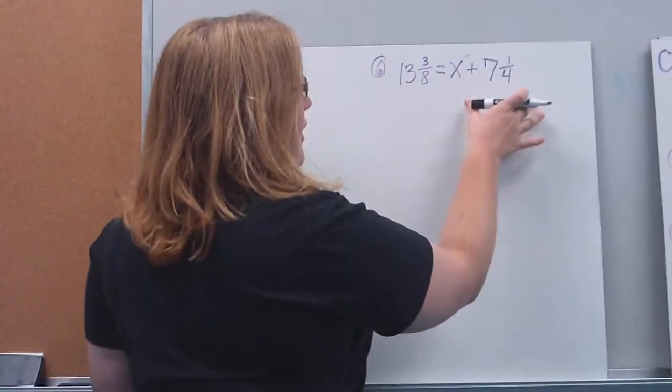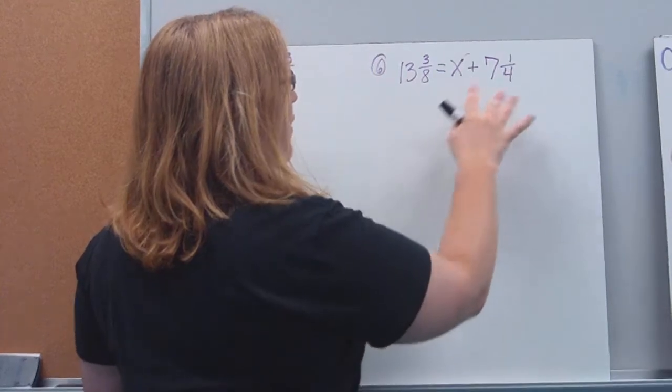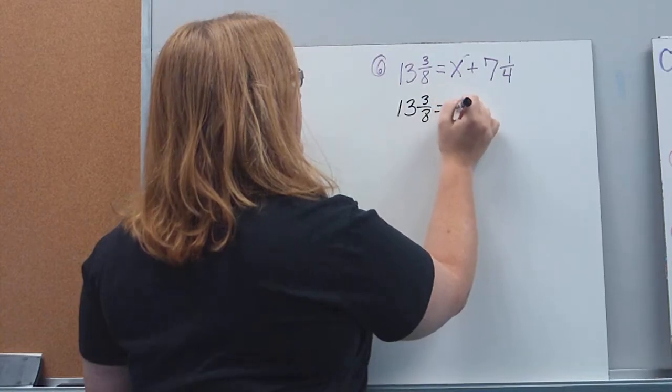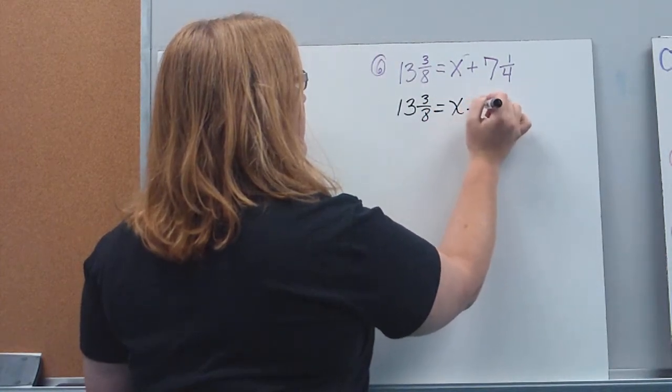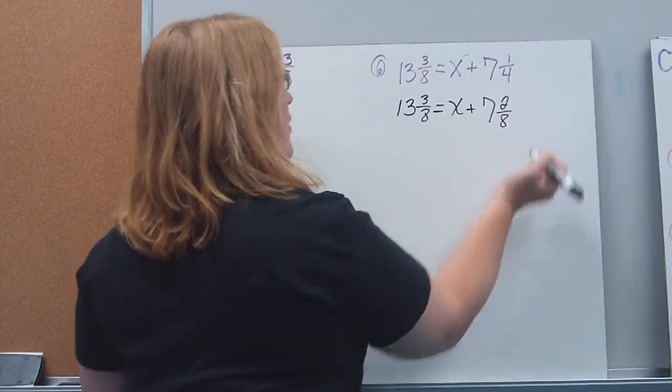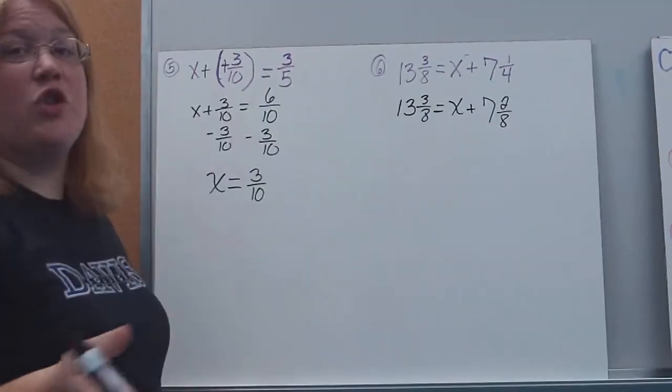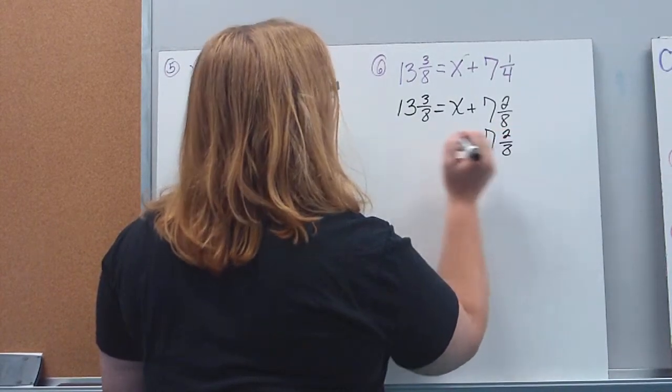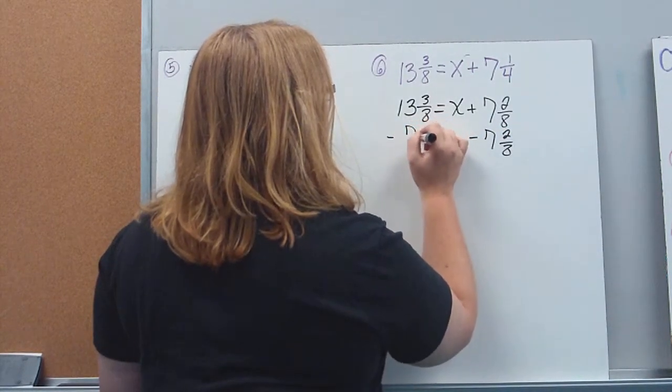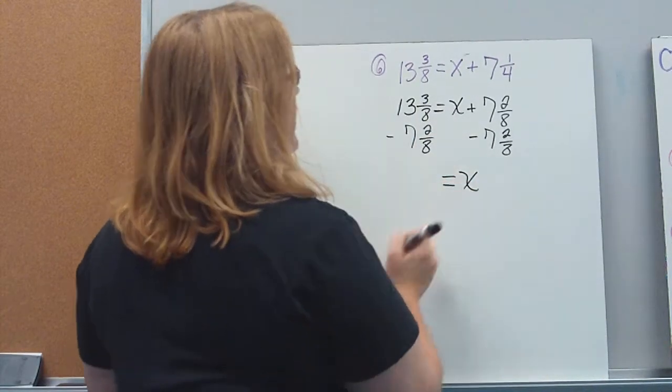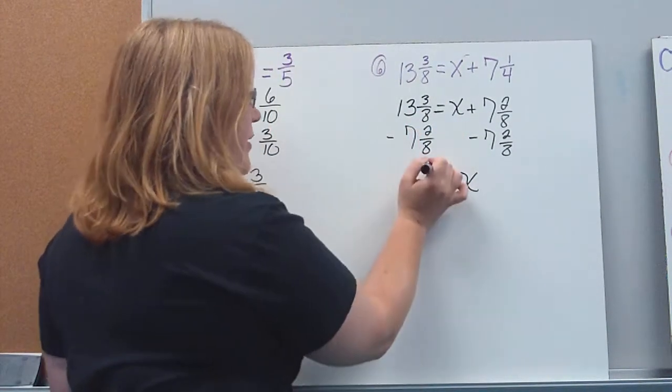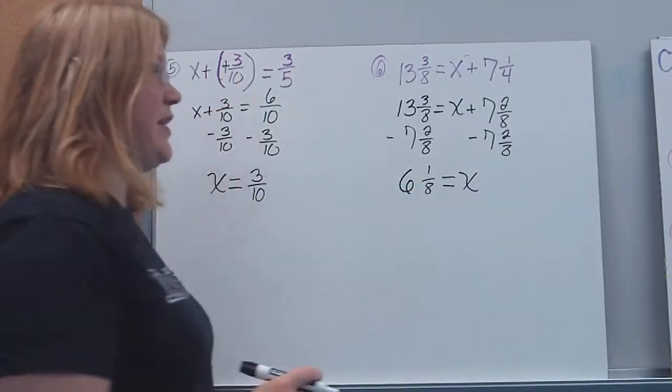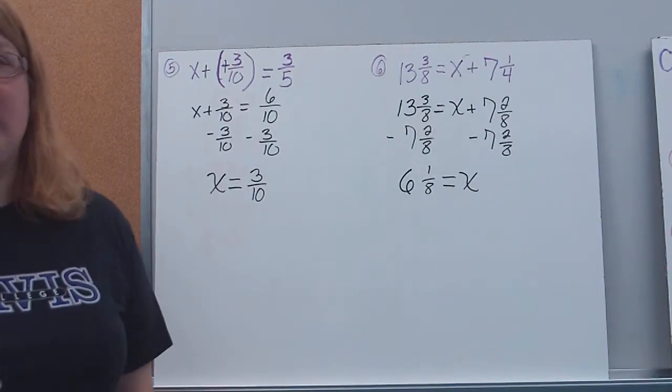Over here, again, the variable's on the other side. Don't let that throw you off. I'm still going to rewrite this so that I have common denominators. My common denominator here would be an eight. So seven and one-fourth becomes seven and two-eighths. I'm doing addition, so to undo my addition, I want to subtract. Over here I'm left with x. Three-eighths minus two-eighths leaves me with one-eighth. Thirteen minus seven gives me six. So x is equal to six and one-eighth.